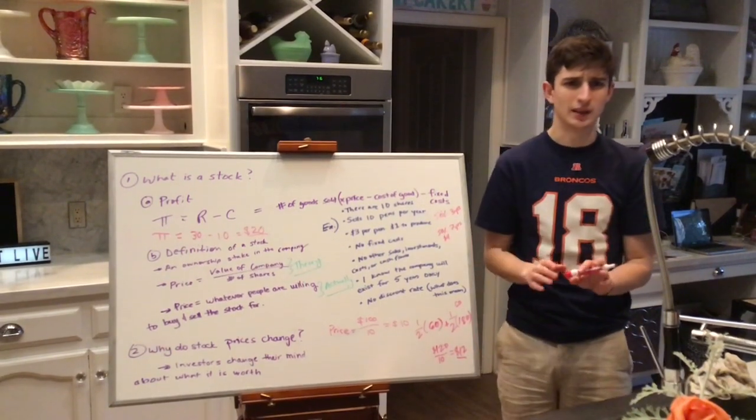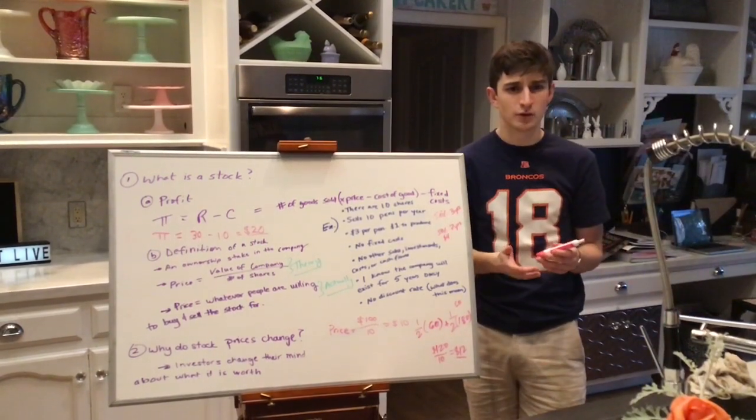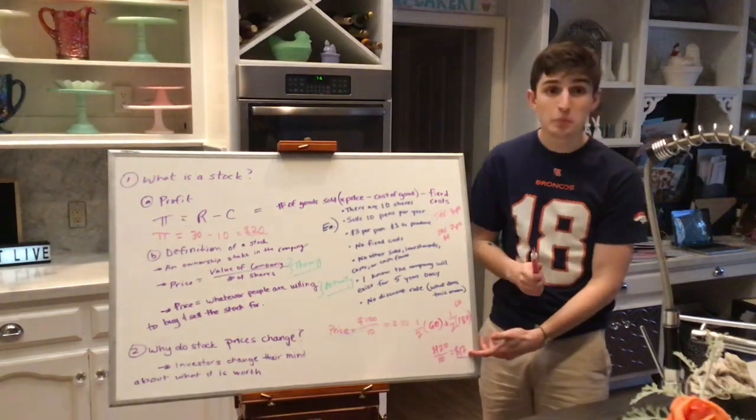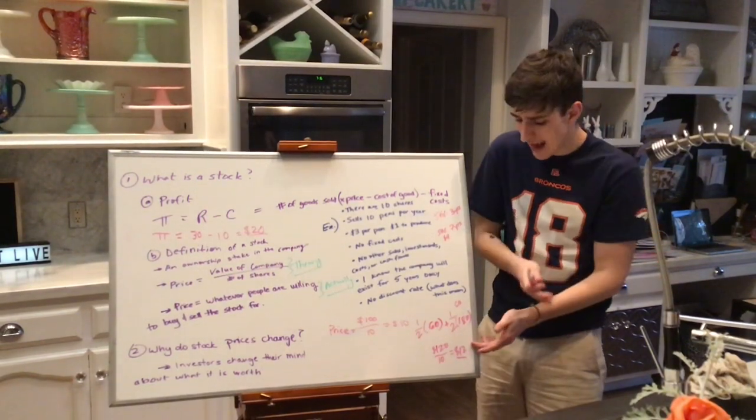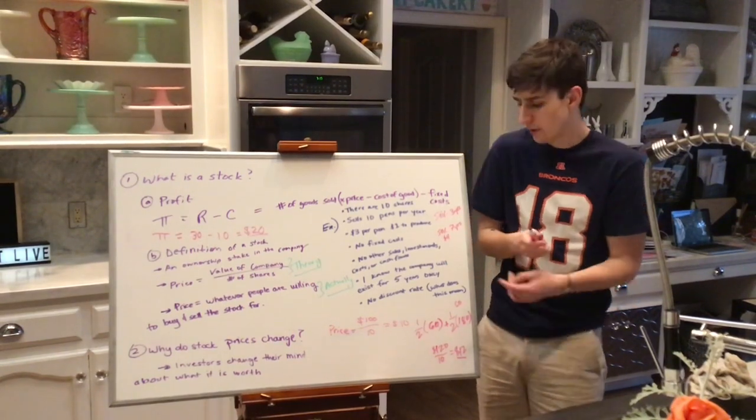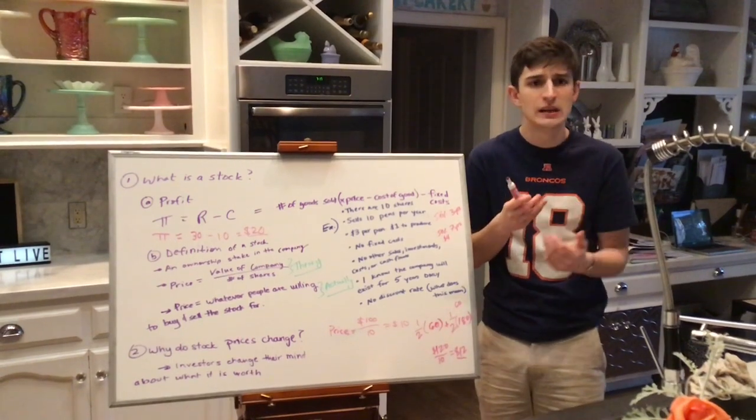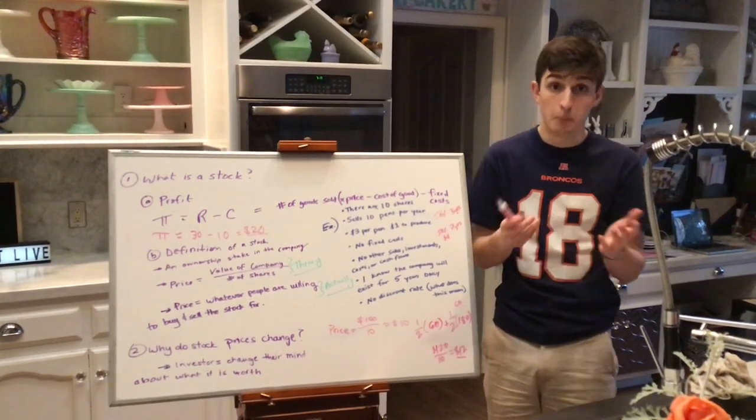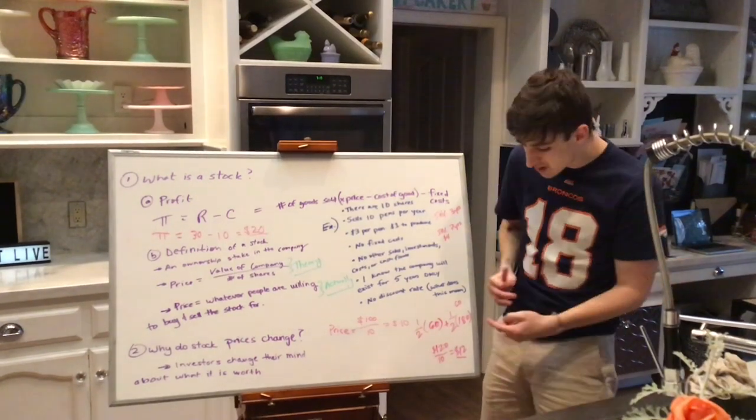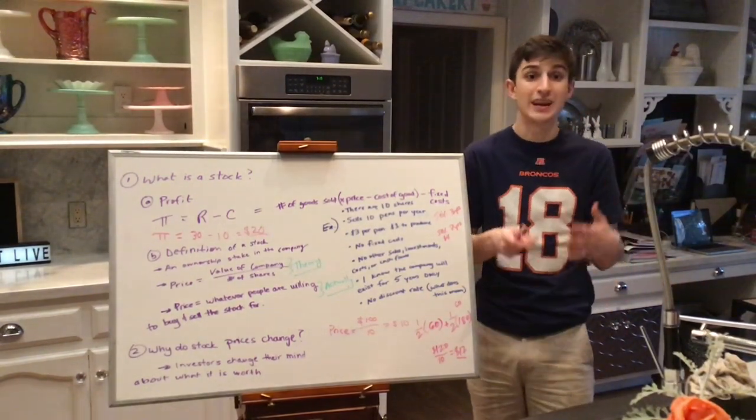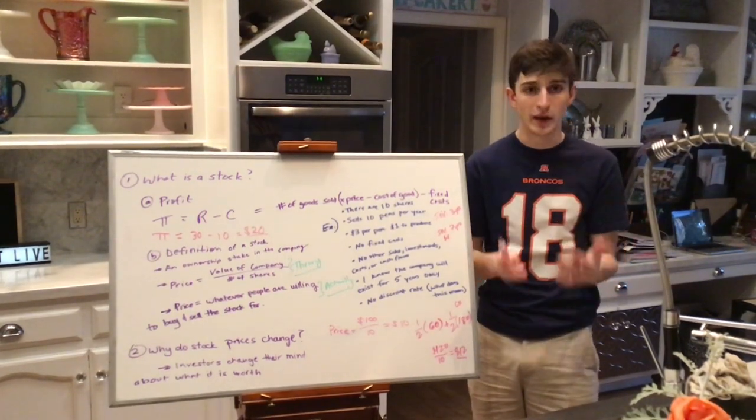But notice something here. If these outcomes are right, if the business does end up folding after three years, the investors who bought this stock lose out because the stock was actually only supposed to be worth $6. And so after the third year, they're not going to get the value they expected out of the business. But if this world is correct in the other half of the time, and it's actually worth $180, which would be $18 a share, then the investors win. This is something that we call risk.